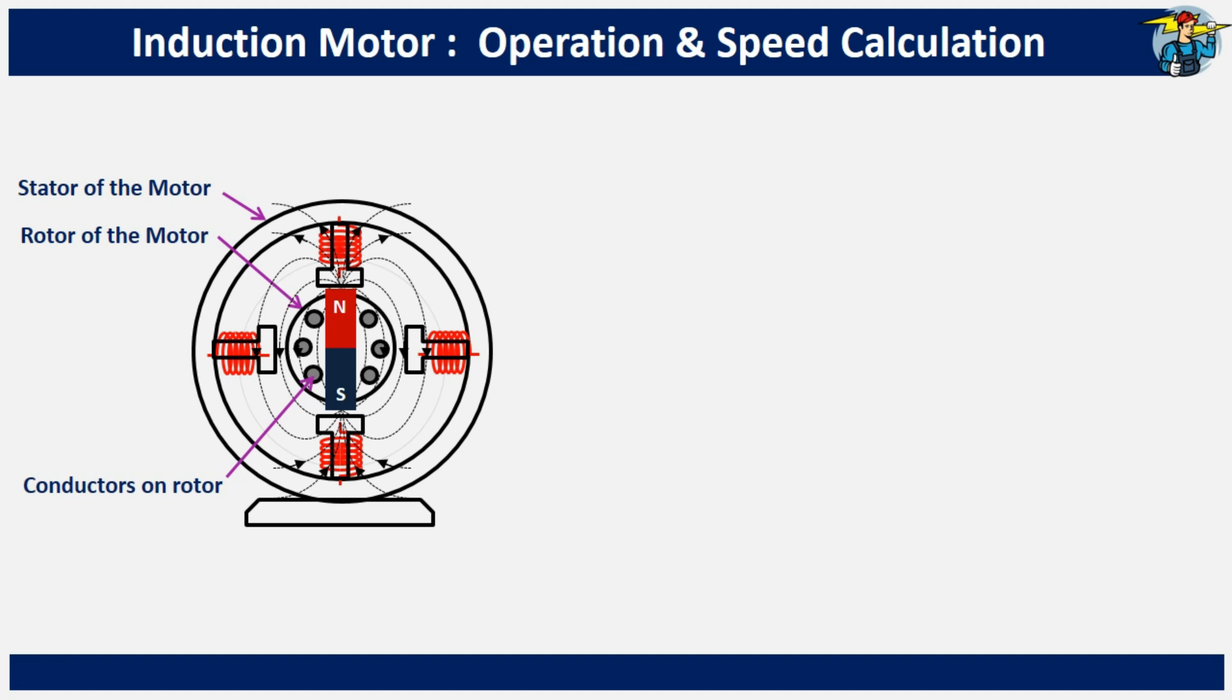Let's calculate the speed of a motor using this simple formula. The synchronous speed, or the speed of the rotating magnetic field, depends on the frequency of the supply voltage and the number of pole pairs. Frequency f in hertz equals ns multiplied by p, where ns is the synchronous speed and p is the number of pole pairs.